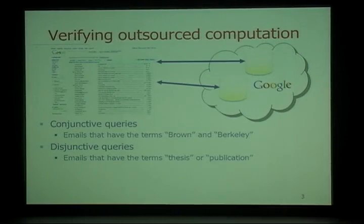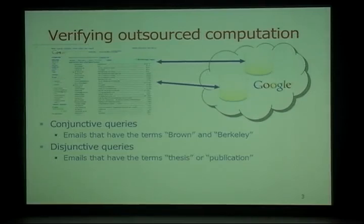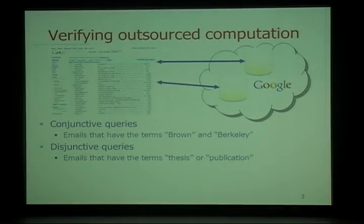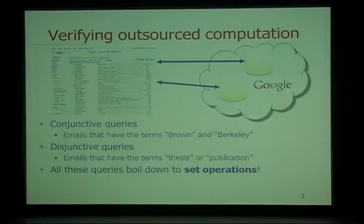One motivation for this work is searching your Gmail inbox. When you search your emails, you can give conjunctive queries — return emails that have terms 'Brown' and 'Berkeley' — or disjunctive queries, such as returning emails that have terms 'thesis' or 'publication'. These queries are implemented through an inverted index, where each keyword is mapped to a set of emails. Retrieving emails for a combination of keywords involves computing an intersection of sets. All these operations boil down to set operations, and we study how to efficiently verify set operations computed remotely.